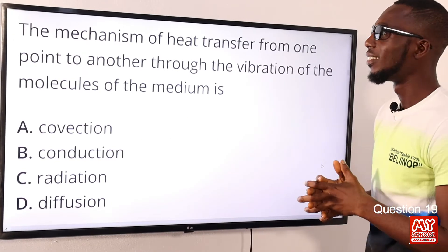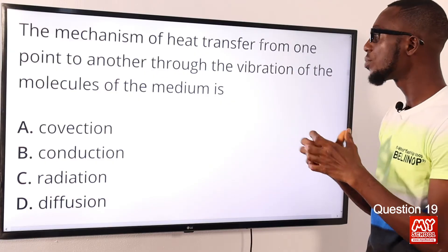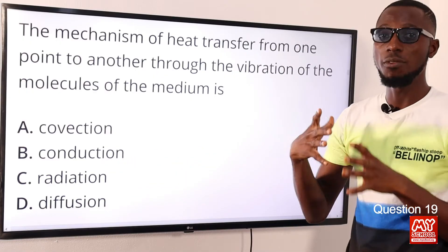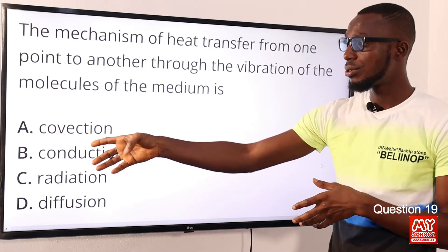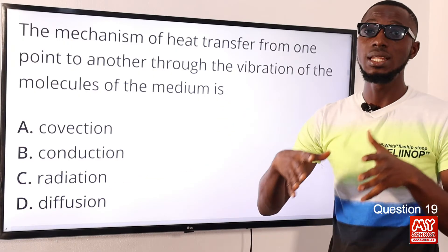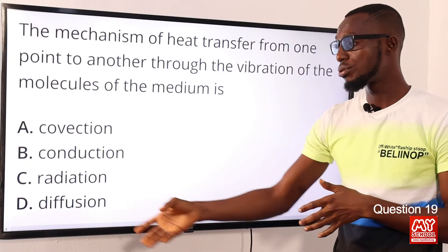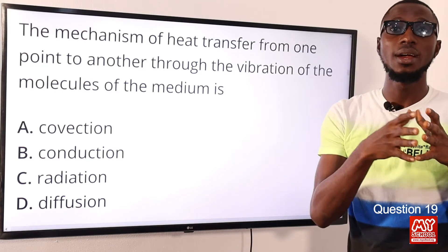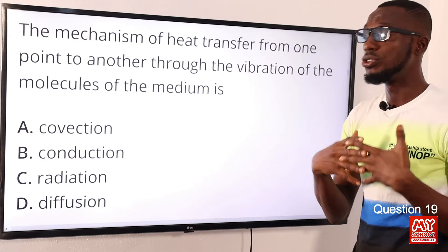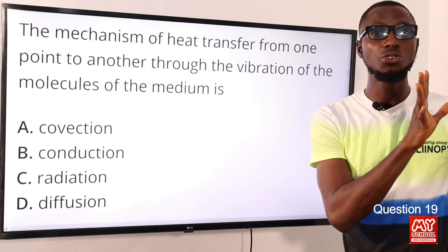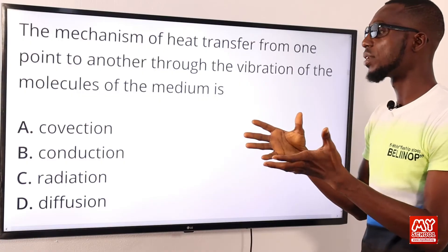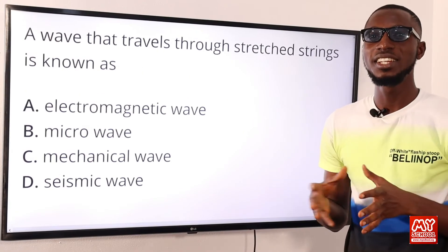Question 19: The mechanism of heat transfer from one point to another through the vibration of molecules of the medium defines conduction. Convection is heat transfer by the actual movement of heated particles. Radiation does not need a material medium for its propagation. Diffusion is the movement of molecules from a region of high concentration to a region of lower concentration — for example, body spray spreading across a room. The correct option is B: conduction.